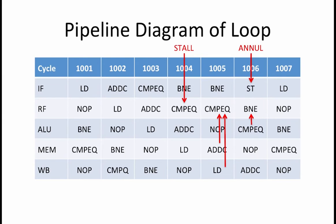Here is a complete pipeline diagram showing repeated execution of the loop in our example code, together with the bypass paths being used as well as the initiation of stalls and annulment of branch delay slots.